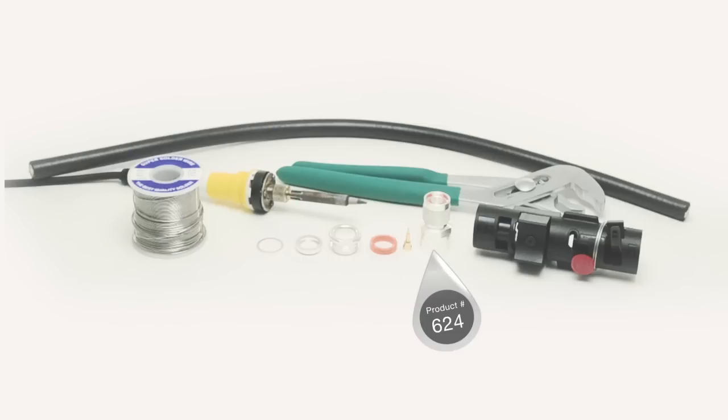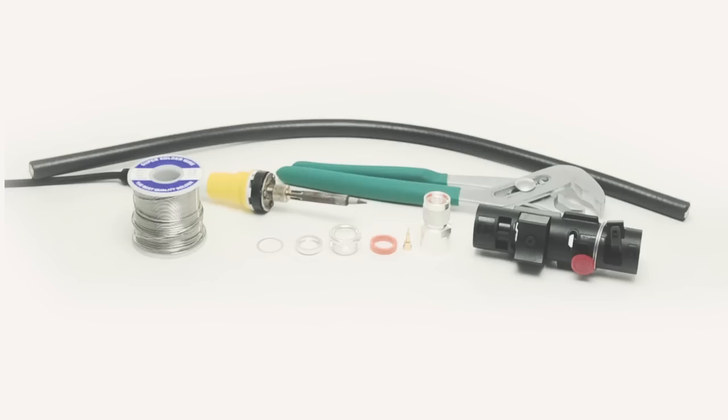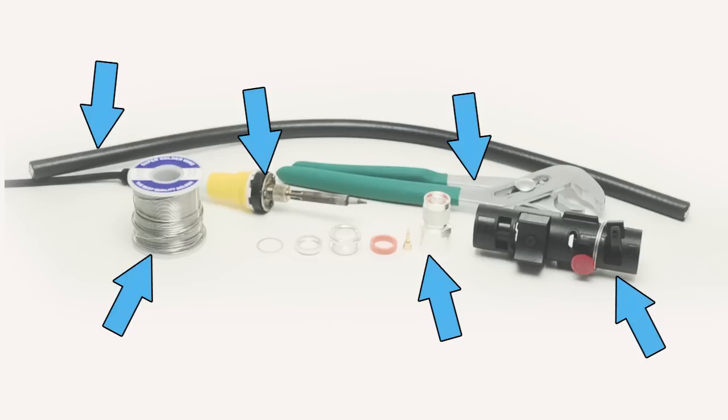LMR 600 is a large rigid cable that requires special tools to terminate. For today's installation, I'm going to need LMR 600, an in-mail clamp connector, a soldering iron with solder, a wrench, and the specialty LMR 600 prep tool.